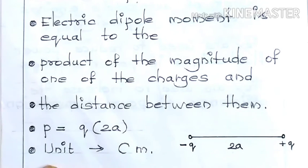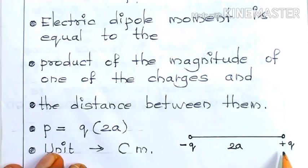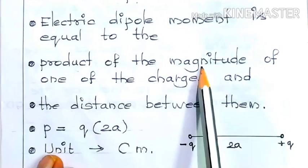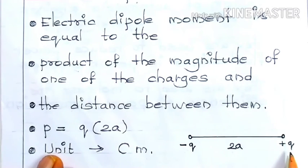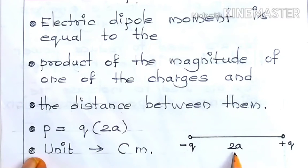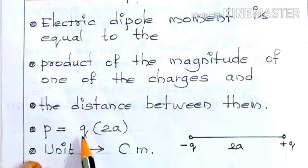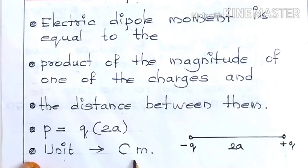To define the dipole moment, we take either minus q or plus q and multiply it with the distance between them, that is 2a. Electric dipole moment p is equal to q into 2a, where q is the magnitude of one of the charges and 2a is the distance between them. The unit of electric dipole moment is coulomb meter, since the unit of charge is coulomb and the unit of distance is meter.